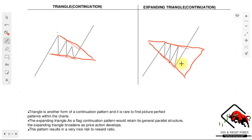The triangle is another form of continuation pattern, and it is very rare to find a picture-perfect triangle on the chart. You're not looking for an exactly perfect triangle — it just has to form a triangle-like shape for you to confirm it as a triangle continuation pattern. The expanding triangle broadens its price action as it develops, and then we see a breakout which gives us a perfect entry into the market. It doesn't have to be exactly as shown here — you just have to be able to spot the triangle structure on the market.